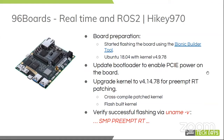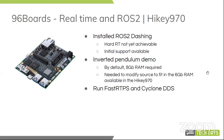We started preparing the board using the Linaro Build tool to get Ubuntu 18 with kernel 4.49.78. Following that, using Manny's instructions on enabling a different kernel for the HiKey 970, we updated the bootloader and upgraded the kernel to 4.14.78 in order to match the PREEMPT_RT patching. After cross-compiling the kernel, we built it, and in order to check that the real-time kernel was enabled, we installed ROS2 Dashing, where hard real-time is not available but there is some initial support. We started looking at the inverted pendulum demo. One quirk was that by default we needed 8 GB of RAM, but the HiKey 970 only has 6 GB.